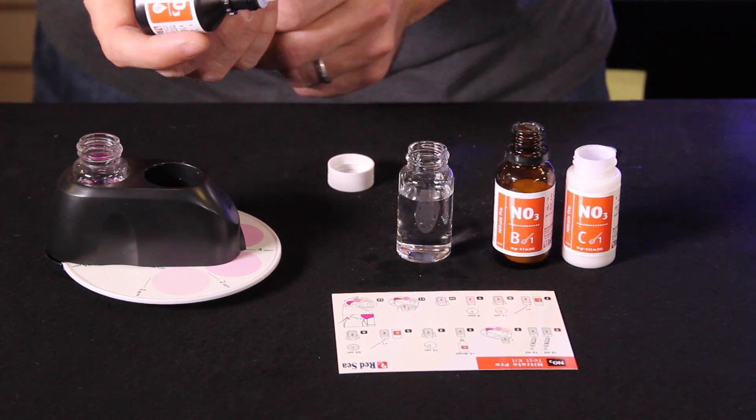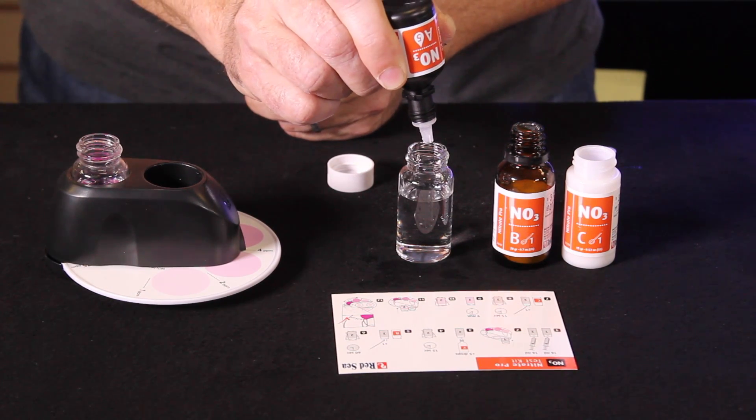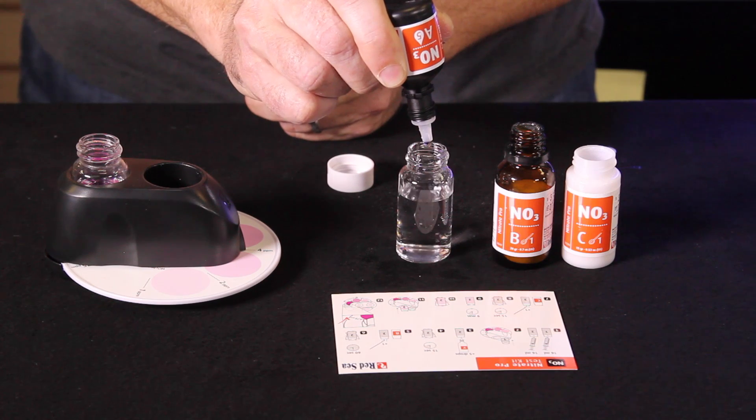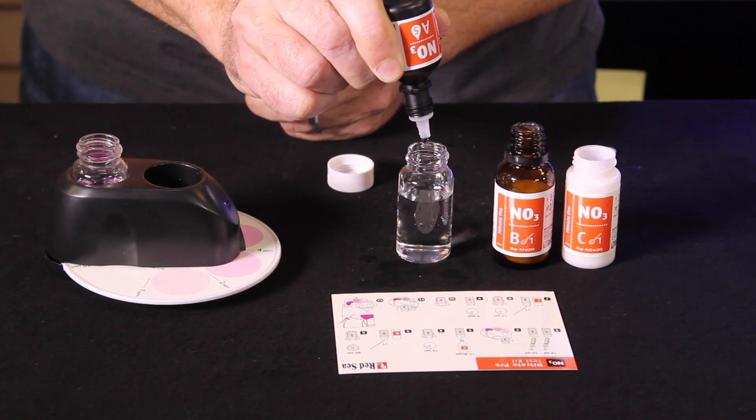So the first step is to add five drops of reagent A. Again turn the bottle upside down so you get five even drops. One, two, three, four, five.